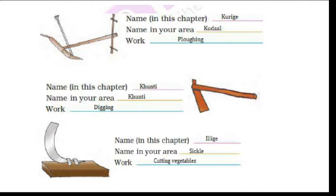We have seen in this chapter that seeds are used to grow crops. The first implement shown is used for ploughing. Write the name used for it in your area — whatever it is called locally, write that down.